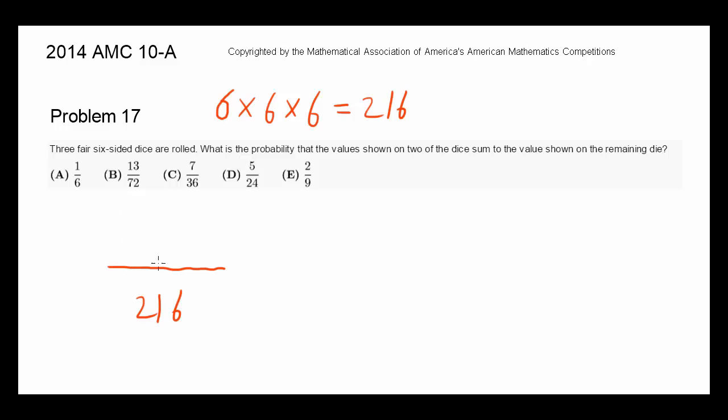Now how many of those 216 values allow us to have two of those values sum up to the last value? Well, let's say the third value is one. Is it possible for the first and second value to add up to one? No! Because first value of one and second value of one, which is already the lowest it can be, is going to give us a sum of two, which is not one.